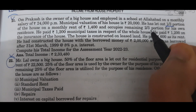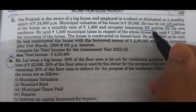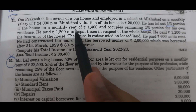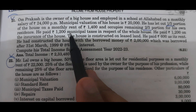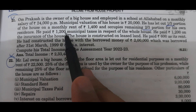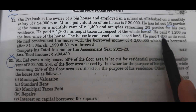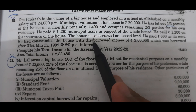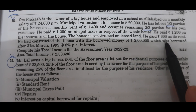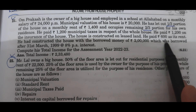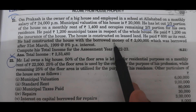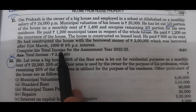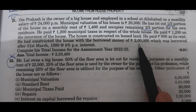So when we calculate income from house property, one-third portion is let out and two-thirds is self-occupied. He paid Rs. 1,200 municipal taxes in respect of the whole house. He paid Rs. 1,200 on the insurance of the house. The house is constructed on leased land and he paid Rs. 600 as its rent. He had constructed the house with borrowed money of Rs. 20,00,000 borrowed after 31st March 1999 at the rate of 8% per annum interest.